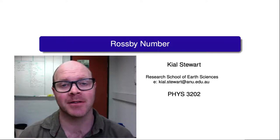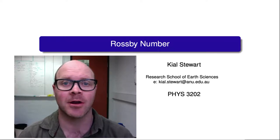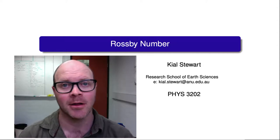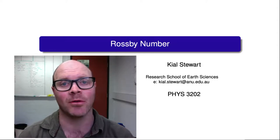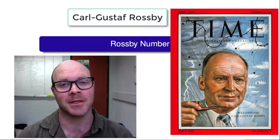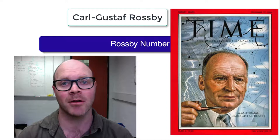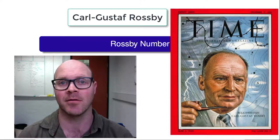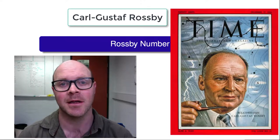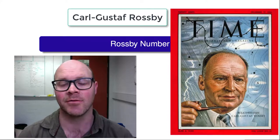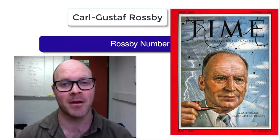During the scaling analysis that gave us the geostrophic balance, we saw that Coriolis terms are leading order when the Rossby number is small. In this video we are going to examine this Rossby number, which is named for Carl Gustav Rossby, the Swedish-American meteorologist who made great contributions to our understanding of oceanic and atmospheric dynamics. Here we will consider Foucault's pendulum to get an intuitive feel for the Rossby number — the dimensionless parameter that characterises the importance of background rotation.